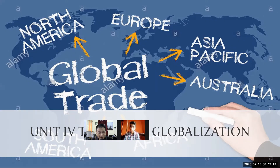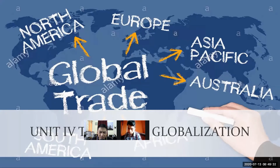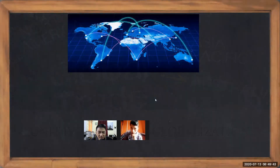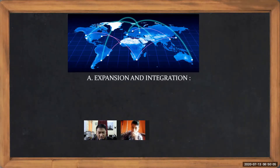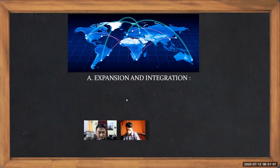Globalization impacts everyone. For example, what we are doing this morning is also in a sense a form of globalization — through this application Zoom, we could have been in any part of the world and we are all connected together at the same time. The first thing to note is expansion: how it grows, spreads from one part to another. In the modern world we live in today, there is no part of the world which is not connected, but we need to look at the beginning — how it all begins.